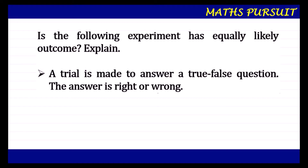Now, if you look here at the question, it is saying that there are two things — true or false. The answer is right or wrong. Only two things are involved. Whenever two things are involved, then definitely that particular outcome will have equally likely probability.